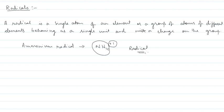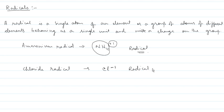Now we will see how many types of radicals there are. There are two types of radicals. The first is positive radicals, which are also called basic radicals. Positive radicals are those which have a positive charge. The second type is negative radicals.